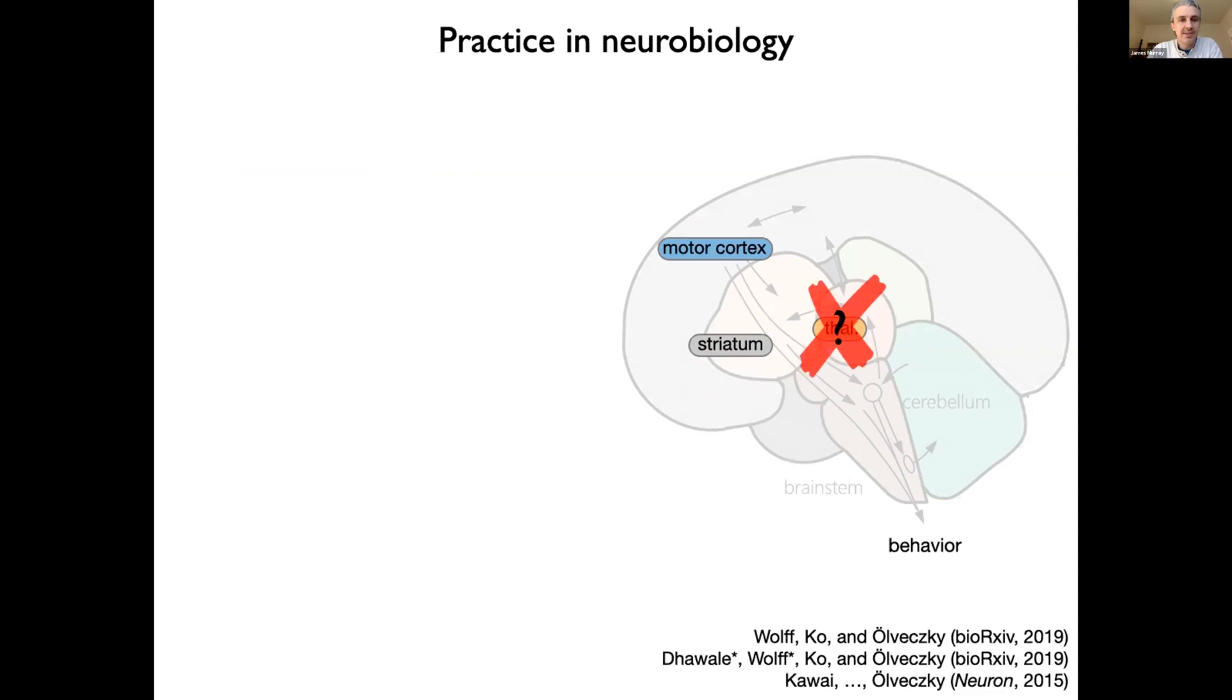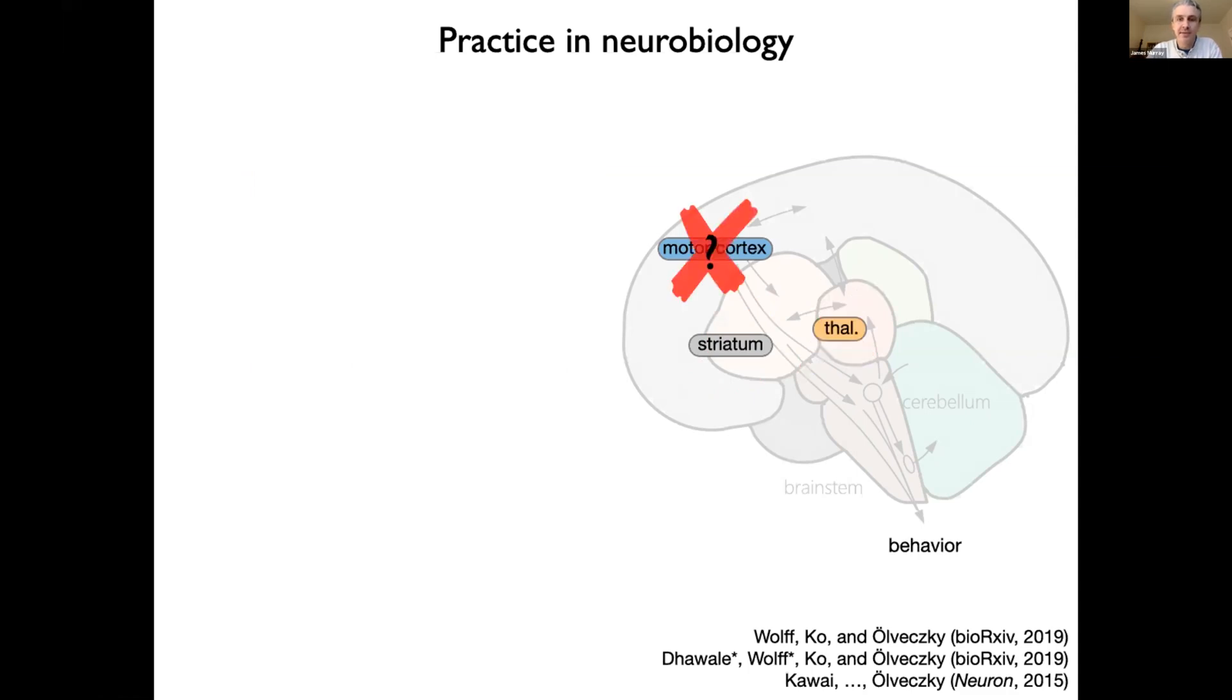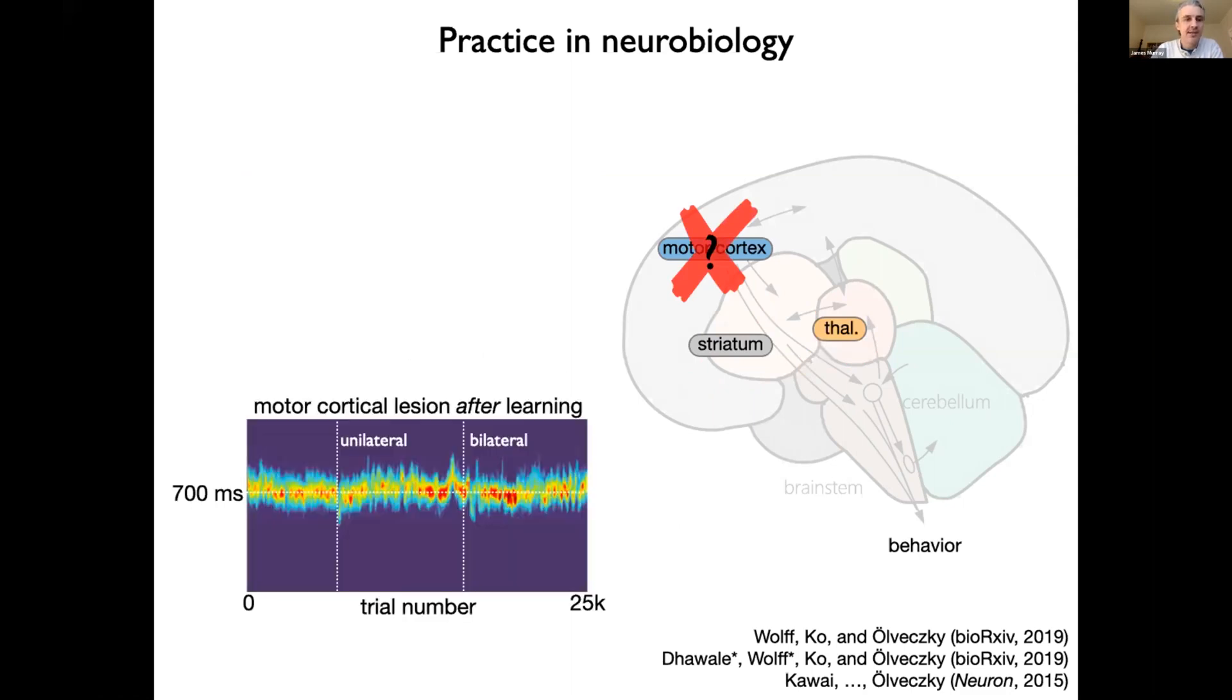If you do the same thing in thalamus, then the same result is obtained, namely the animal loses the ability to perform the behavior and never regains it. If you do the same thing in motor cortex, however, the effects are a little bit more subtle. So first, if you take a trained animal that's already learned and you remove motor cortex, and for technical reasons the lesion has to be done in two stages, then the rat is perfectly able to perform the behavior just as well as before, which may be surprising if you think motor cortex is playing the role of producing movement, as we often do.